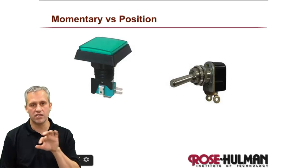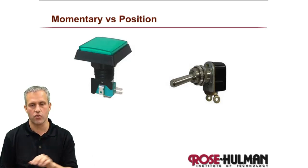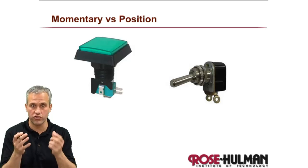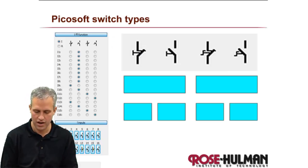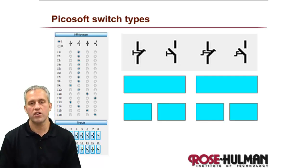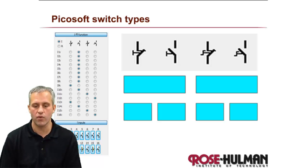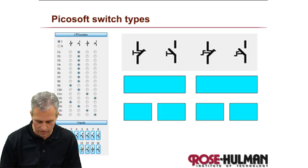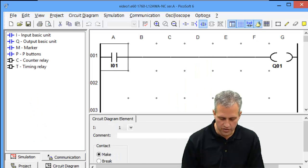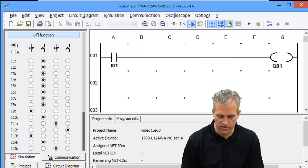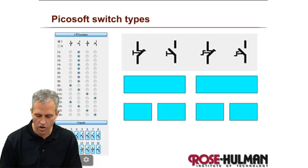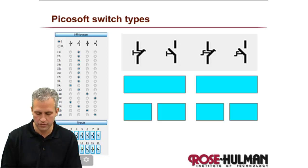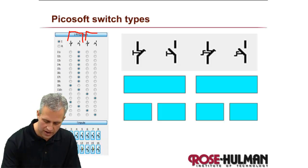The momentary/position distinction is mainly important so you can make the simulation match the real world. When writing the circuit, you don't even care about how the switch works — you just care about made or broken. In PicoSoft, you need to know both concepts and how to use them. From the previous video we did an example where we made them all the second column. It turns out the second column is momentary normally open. Each column defines a type.